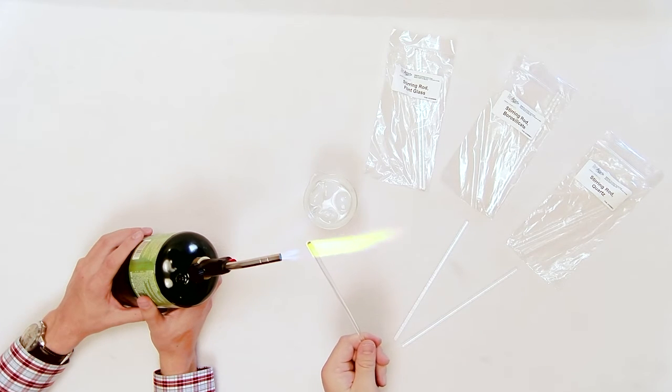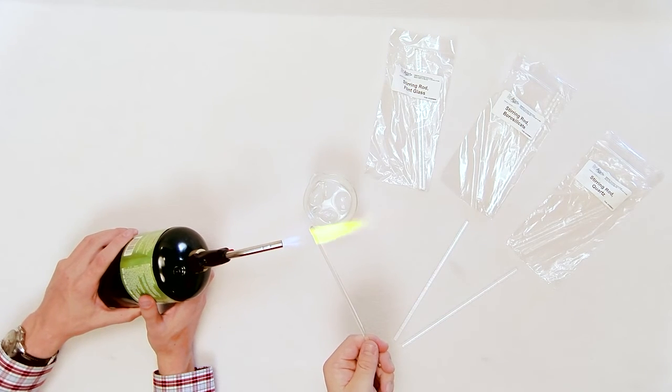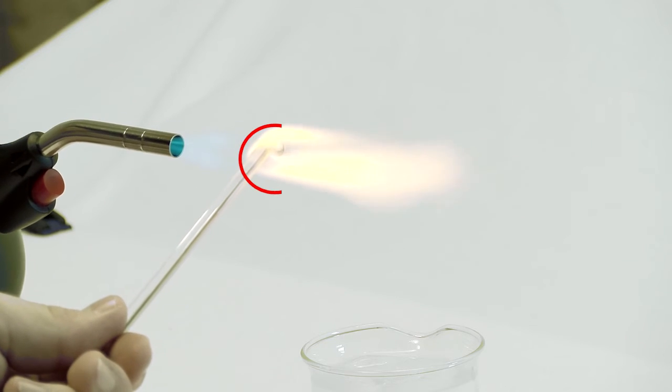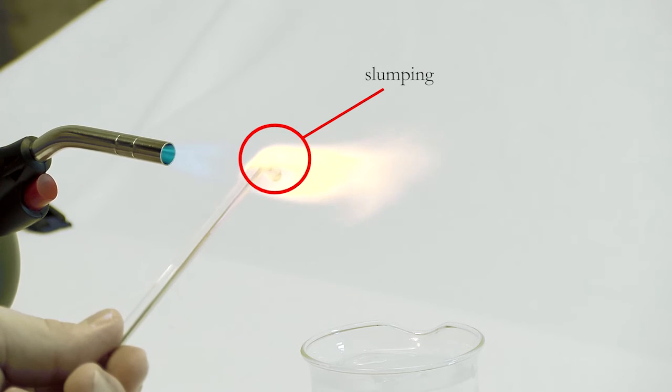Try to hold the glass rod so that the same length of glass is in the flame throughout the heating. Point out the sodium flare that occurs as the glass heats up. Allow the glass to sag or slump to show softening.